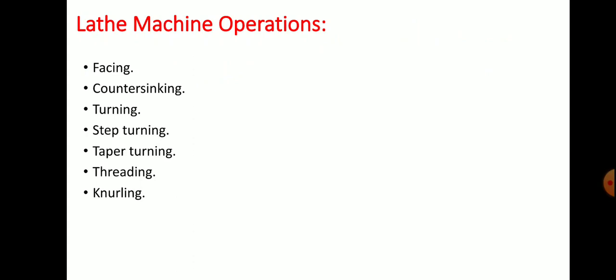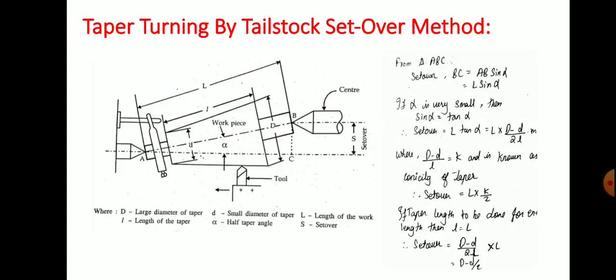Now let us go through lathe machine operations. These are the operations performed on a lathe: facing, countersinking, turning, step turning, taper turning, thread cutting, and knurling.